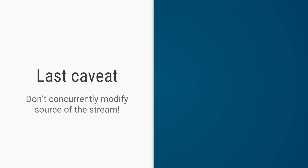A final caveat: when a stream operation is being performed by a thread on a list or array, you should avoid modifying that source in another thread. You need to provide thread safety in your source — for example, using concurrent versions of lists and arrays. So that's it about streams — quite elegant and quite powerful to use. Thanks for watching and see you in the next one.